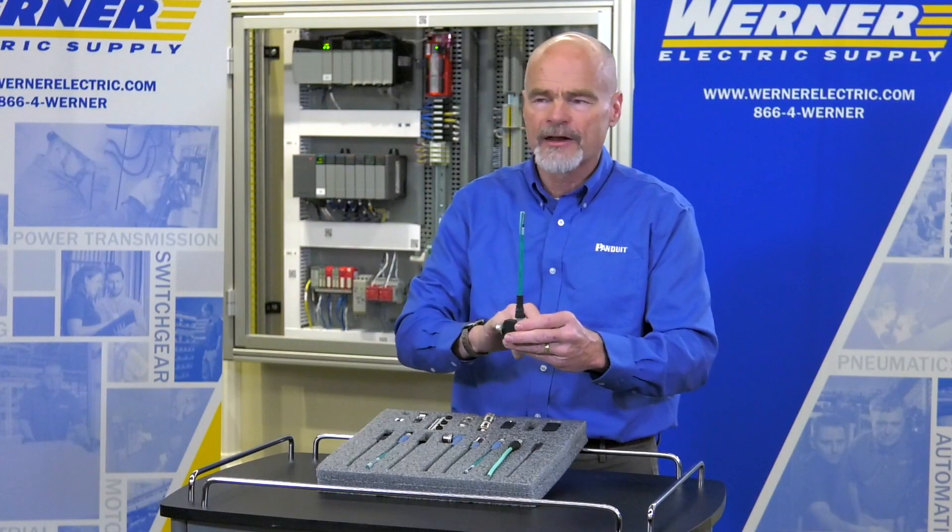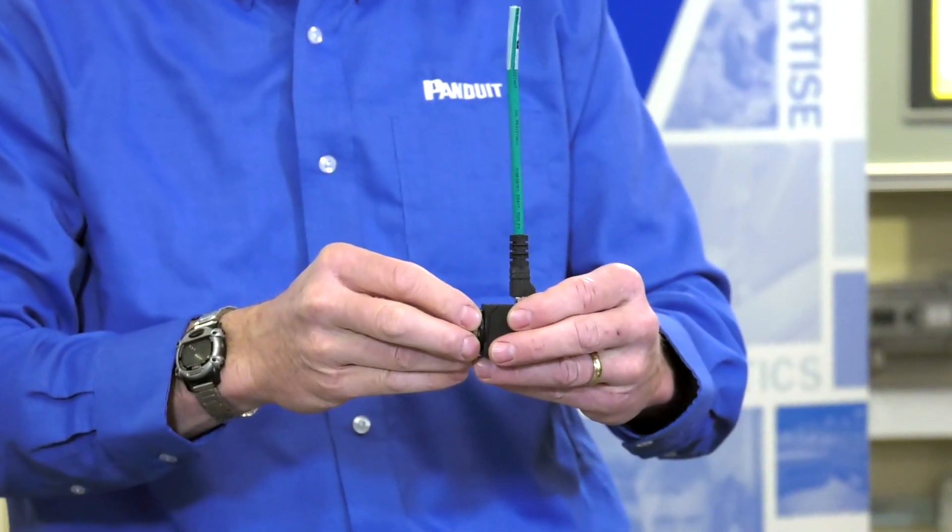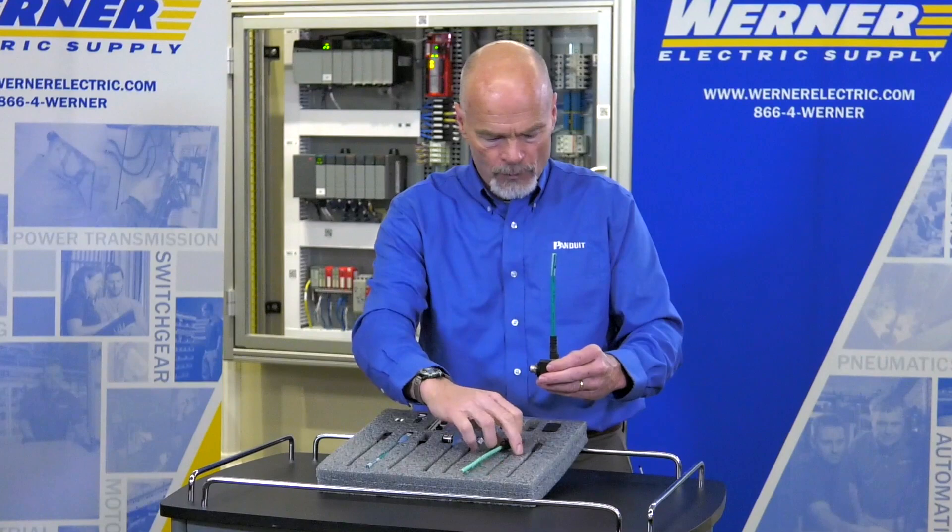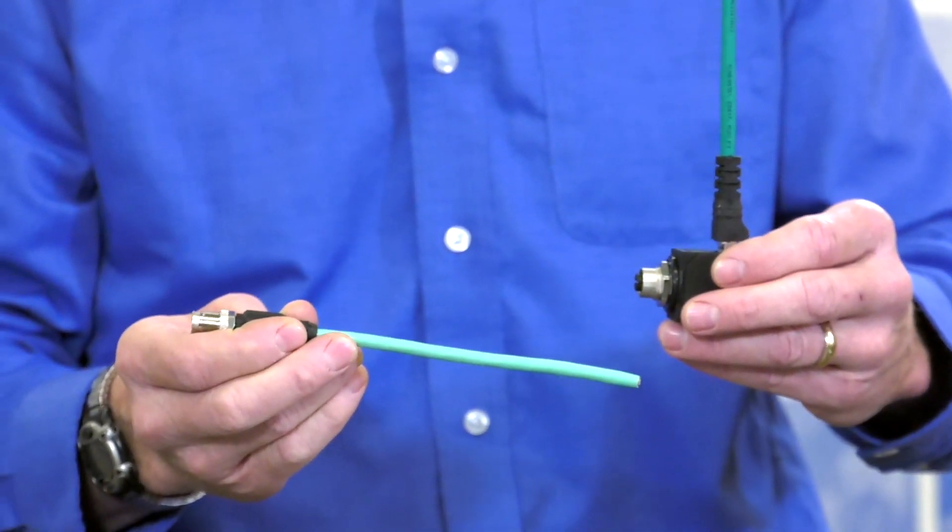But from outside the box, if you were to use a standard Ethernet cord that would be a very harsh environment for that standard Ethernet cord. Therefore we came up with a product called a hardened cord set or M12 connectivity.